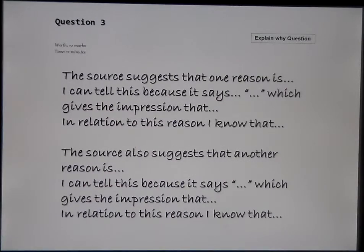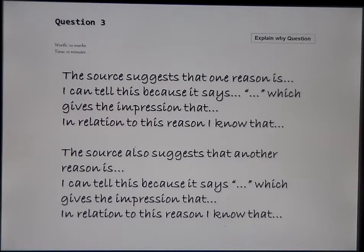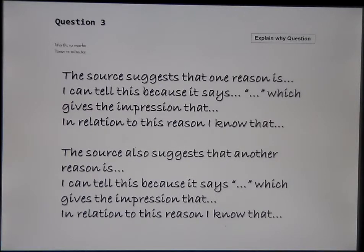Question 3 is the 'explain why' question. It will ask you to explain why something happened, and you must use the source and your own knowledge, doing this twice. Structure: 'The source suggests that one reason is... I can tell this because it says...' with a direct quote or reference, then 'this is giving the impression that...' and 'in relation to this reason, I know that...' bringing in your own knowledge. For the second reason, use another one from the source if you can find one; if not, use your own knowledge. But you must have two reasons.